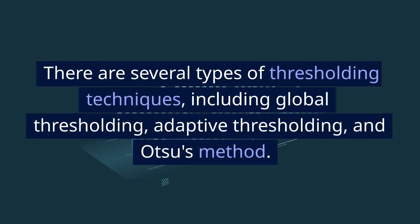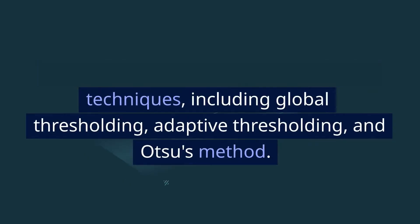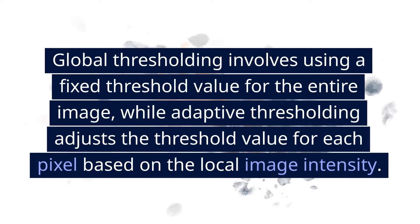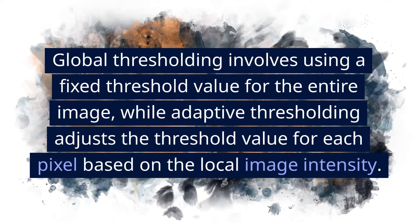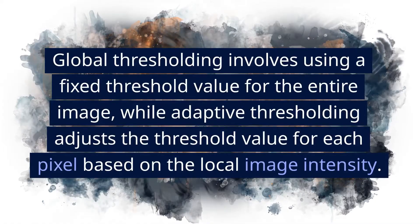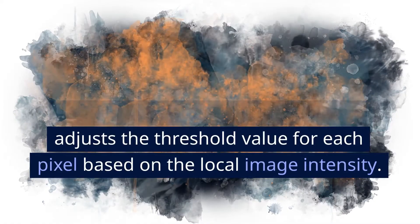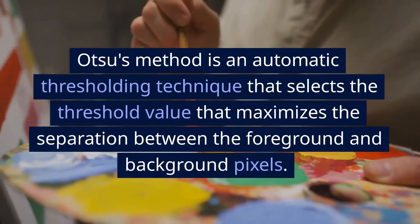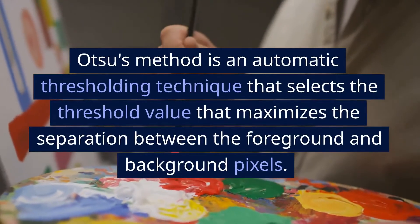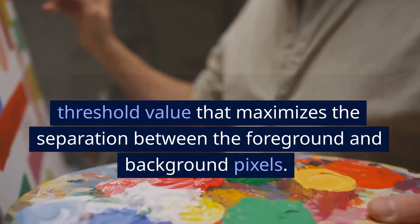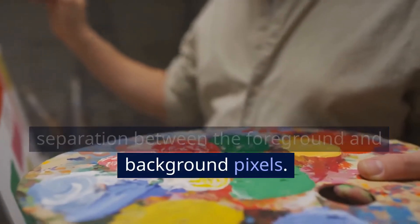The threshold value can be selected manually or automatically based on the image histogram. There are several types of thresholding techniques, including global thresholding, adaptive thresholding, and OTSU's method. Global thresholding uses a fixed threshold value for the entire image, while adaptive thresholding adjusts the threshold value for each pixel based on local image intensity. OTSU's method is an automatic thresholding technique that selects the threshold value which maximizes the separation between foreground and background pixels.